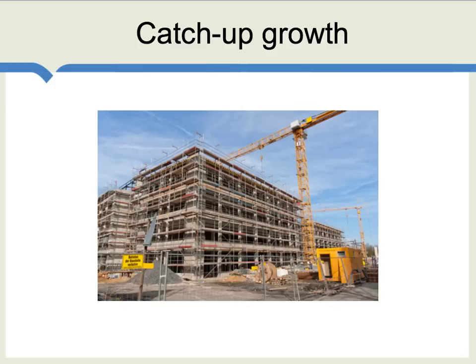Precisely because the poor country is lacking so many important things, the rate of return on investing capital in the poor country is especially high. So if you think of Japan and Germany after the end of World War II, once they start rebuilding, they have higher growth rates than the United States because they were doing that catch-up — rebuilding their factories, repairing roads, putting their cities back together again. There was a very high rate of return on capital investment in those very important ventures.